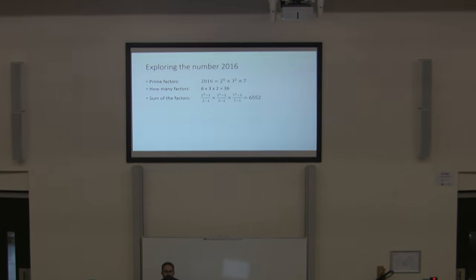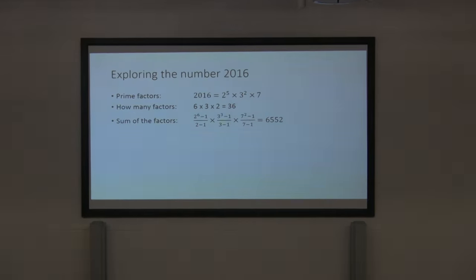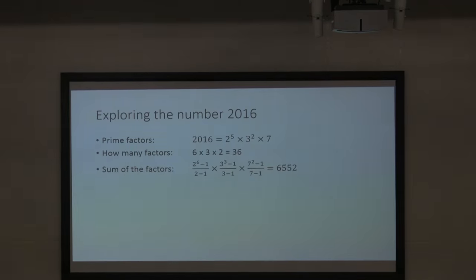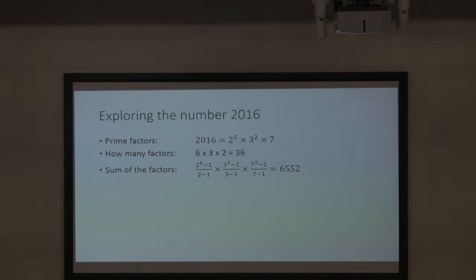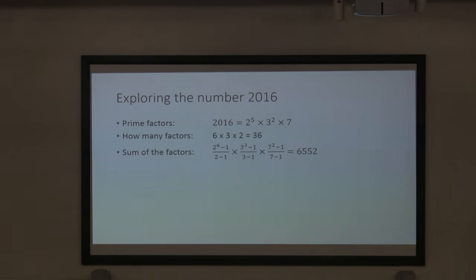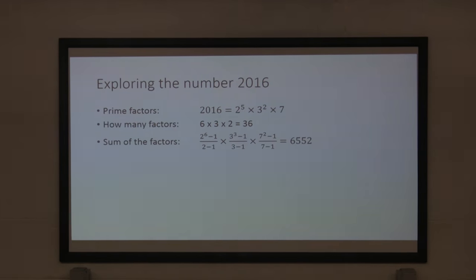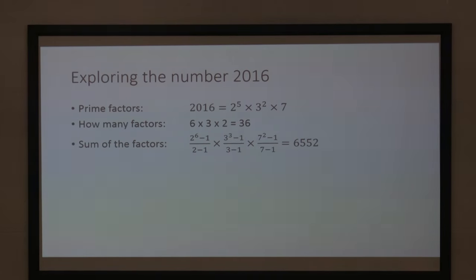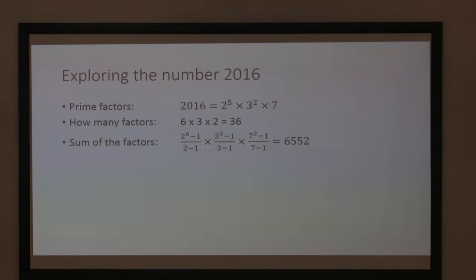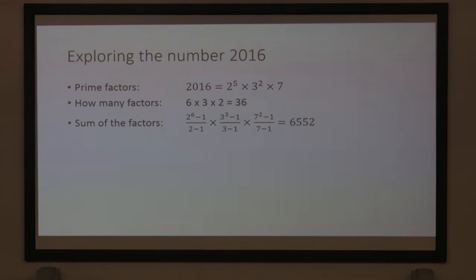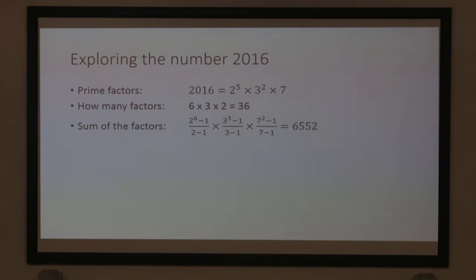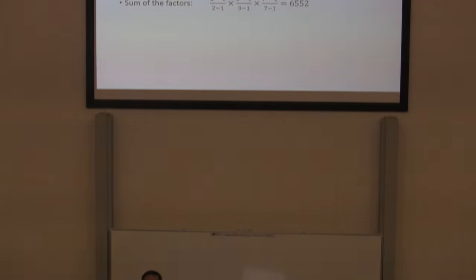How about the sum of all the factors? When you take those 36 factors, do you know how to work out the sum of all the factors of a number? There's a rule. You can see each of the prime numbers — the two, the three, and the seven. You raise each one to one more than the power in the prime factor expression, subtract one, and divide by the prime number minus one. That's the sum of all factors of a number, including the number itself.